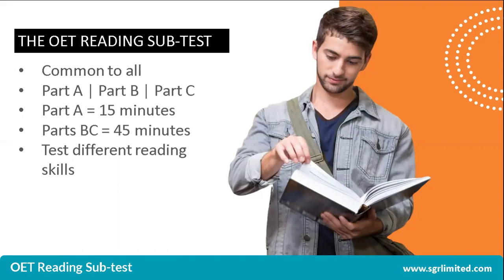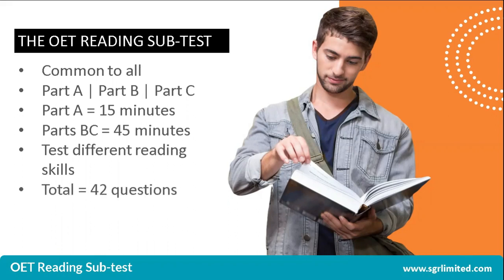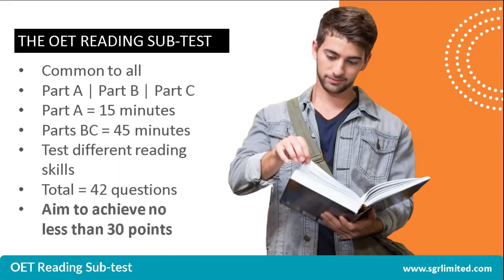For the full test, you will need to accurately understand different complex language. The test has a total of 42 questions. The reading test is marked as follows: Reading Part A contains 20 points, Reading Part B contains 6 points, and Reading Part C 16 points. You need to aim to achieve no less than 30 points out of 42 in order to reach a grade B.